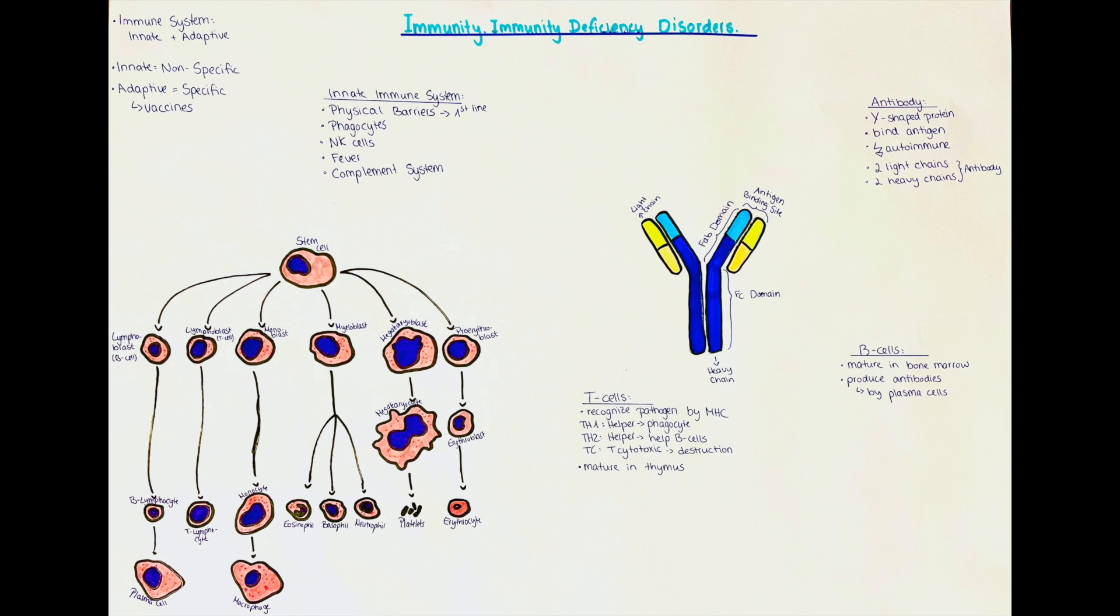When we divide it into first, second, and third line of defense, the first line of defense would be skin and mucous membranes. The second line of defense would be phagocytic cells, inflammation, fever, and antimicrobial substances. The third line of defense would be the specific immune system.